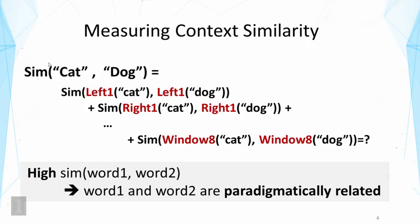The general idea of discovering paradigmatic relations is to compute the similarity of contexts of two words. For example, we measure the similarity of 'cat' and 'dog' based on their context similarity. We can combine all kinds of views of the context, and the similarity function is generally a combination of similarities across different contexts. We can assign weights to these different similarities to focus on particular context types, depending on the application.